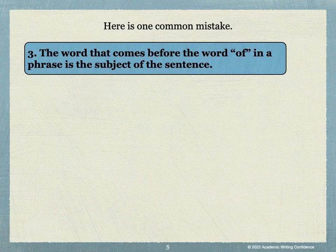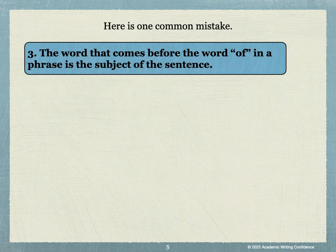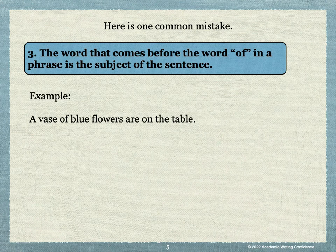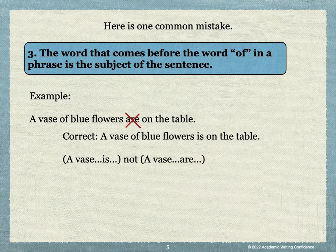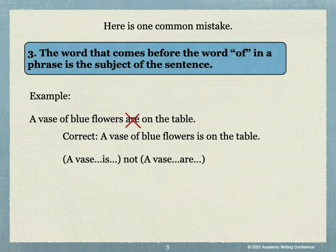Here is one common mistake. The word that comes before the word of in a phrase is the subject of the sentence. For example, a vase of blue flowers are on the table — this is not correct. To write this sentence correctly, it needs to be: a vase of blue flowers is on the table. The subject, a vase, needs to be with is, not are.